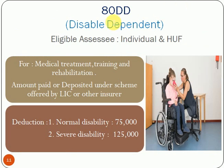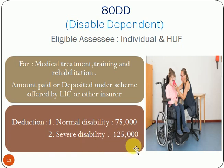Next is Section 80DD, for disabled dependents. If an individual spends money for medical treatment, training, or rehabilitation of a disabled dependent person — meaning a disabled person who depends upon the assessee — then the amount spent on that disabled person can be claimed as deduction under Section 80DD. The deduction amount is limited to Rs. 75,000 in case of normal disability, and in case of severe disability it extends to Rs. 1,25,000. The eligible assessee for this deduction is both individual and HUF.